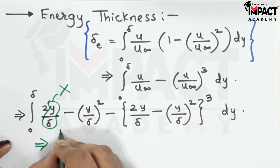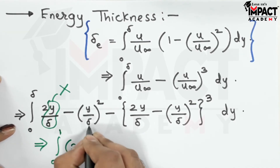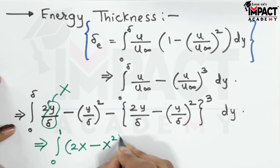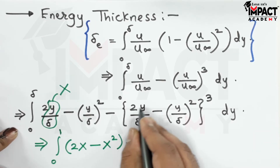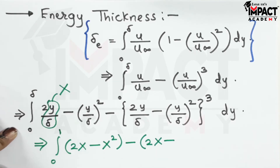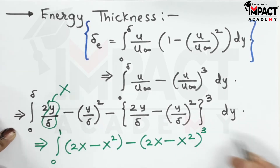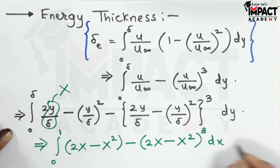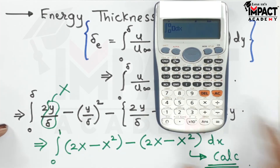The function in terms of x is: integration from 0 to 1 of (2x − x²) minus (2x − x²)³ dx. This is the term to be entered into the calculator.